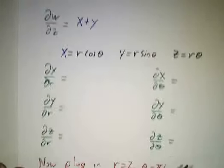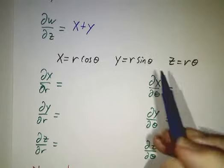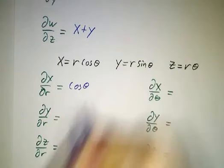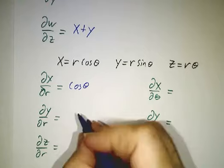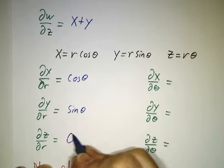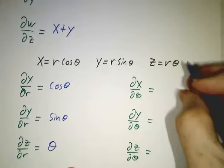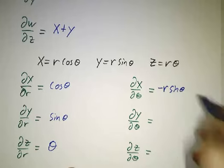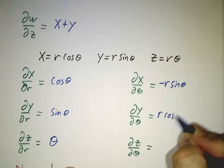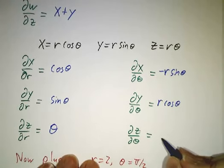We have x = r cos θ, y = r sin θ, and z = rθ. So ∂x/∂r = cos θ, ∂y/∂r = sin θ, ∂z/∂r = θ. And ∂x/∂θ = -r sin θ, ∂y/∂θ = r cos θ, ∂z/∂θ = r.